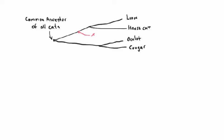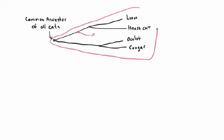Each branching point represents a speciation event that gave rise to a particular lineage. Speciation happened over and over again, and eventually you end up with this big extended family or clade. We can basically draw a circle — shaped like a wedge — that contains all the members of this family united by that common ancestor.